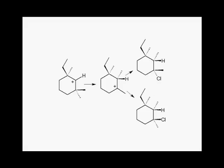Let's consider them one at a time. So in order to figure out which 1,2 shifts are eligible, we start at the carbocation, the carbon that bears a positive charge, and we count to two until we hit either a hydrogen or an alkyl group.